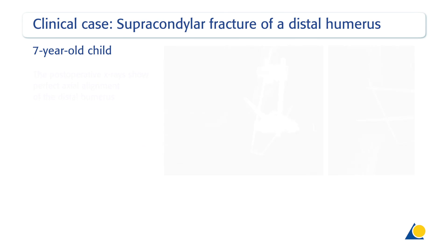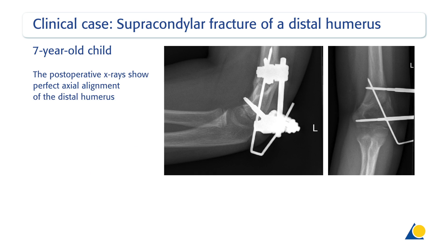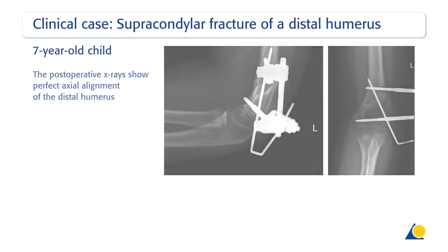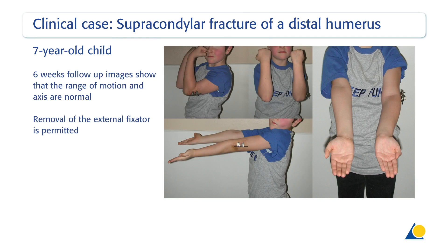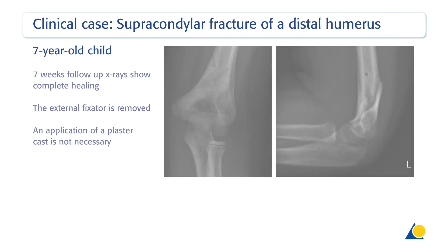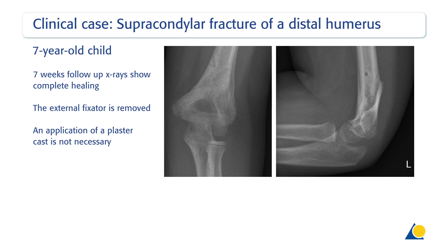The post-operative x-rays show perfect axial alignment of the distal humerus. The 6-weeks follow-up images show that the range of motion and axis are normal, and removal of the external fixator is permitted. The 7-weeks follow-up x-rays show complete healing. The external fixator is removed. An application of a plaster cast is not necessary.